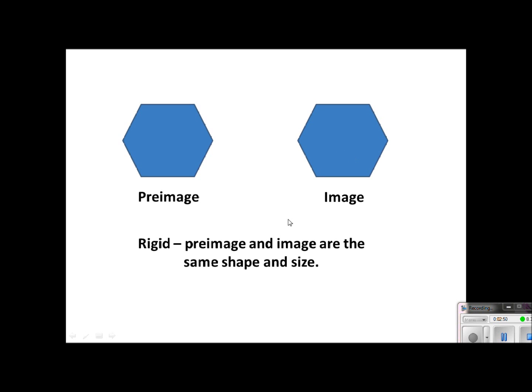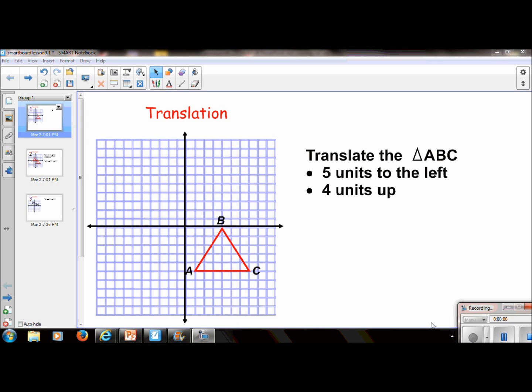Now we are going to look at a translation and dive more into what you're going to see in your homework for 9.1. We're going to take triangle ABC and translate it 5 units to the left and 4 units up. We're going to do exactly what it says here. But instead of translating the entire triangle, I'm actually going to take it point by point and follow this rule right here.